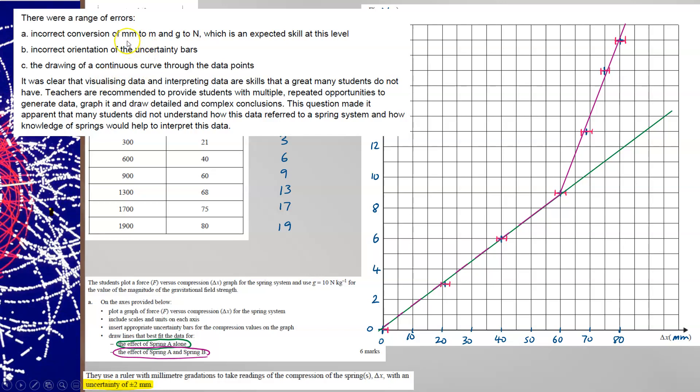So a range of errors. People couldn't convert millimetres to metres. The trick to doing that is to remember that milli means 10 to the minus 3. So you can use your calculator to help convert. And that, of course, is written on the datasheet.